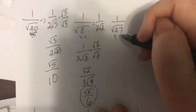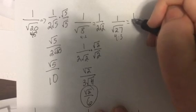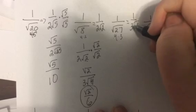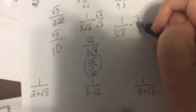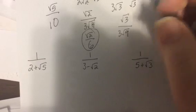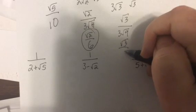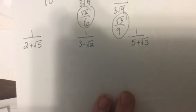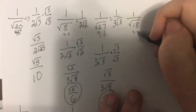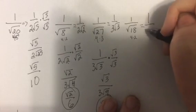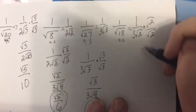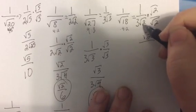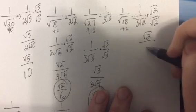This one — 9 and 3. So it would be 1 over 3 square root of 3 because square root of 9 is 3, but I still have this left over. The 3 outside the square root is okay, so I'm going to multiply the top and bottom by square root of 3. So it would be square root of 3 over 3 square root of 9. Square root of 9 is 3, times 3 is 9. And the last one — 18 is 9 and 2, so I'm going to simplify this to 1 over 3 square root of 2. I multiply the top and bottom by square root of 2, so it would be square root of 2 over square root of 4. Square root of 4 is 2, times 3 is 6.